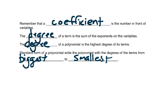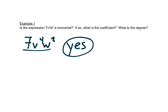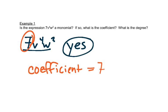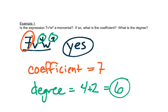Now let's look at an example to talk about all these terms. It asks first: is the expression 7v to the 4th w to the 2nd a monomial? And the answer is yes — it's only got one term because there's nothing added or subtracted to it. The coefficient is the number in front, so the coefficient is 7. To get the degree, you look at the exponents and add the exponents of the variables in that term together. So the degree of this term is 6.